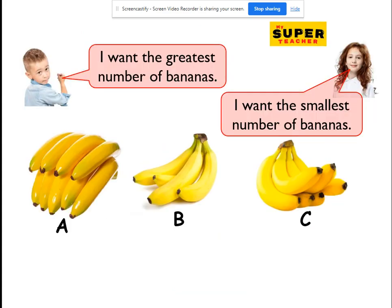Sam says, 'I want the greatest number of bananas.' And Ann says, 'I want the smallest number of bananas.' Obviously Ann doesn't like so many bananas, but Sam loves plenty of bananas. So let's count the bananas.